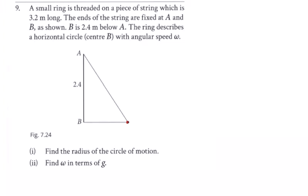Number nine is a very similar question to number eight. We have our ring and a piece of string 3.2 meters long. We call this one x, so the other part will be 3.2 minus x. Using Pythagoras: 2.4 squared plus x squared is equal to (3.2 minus x) squared. That gives us 5.76 plus x squared.